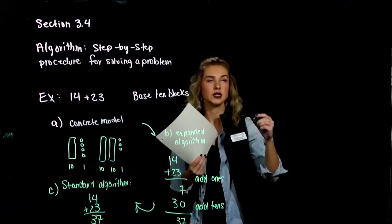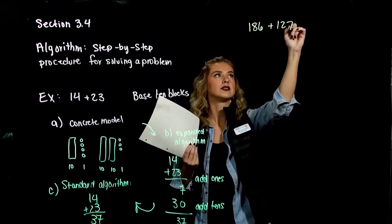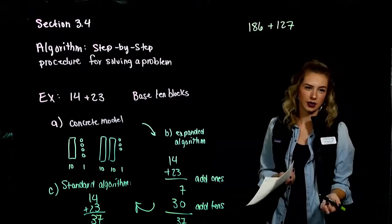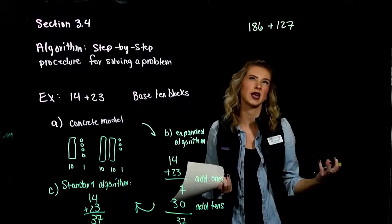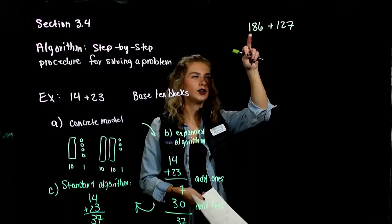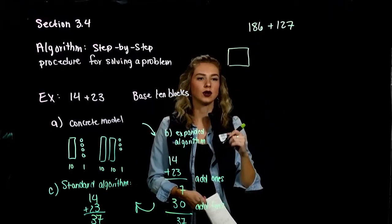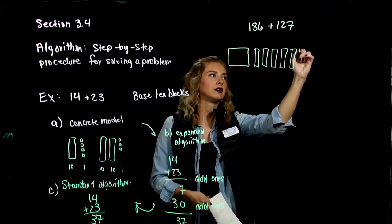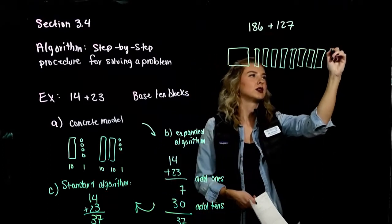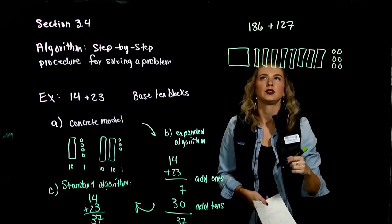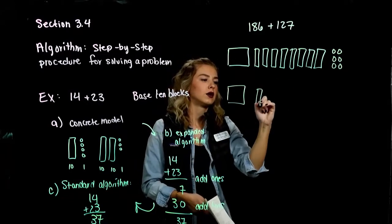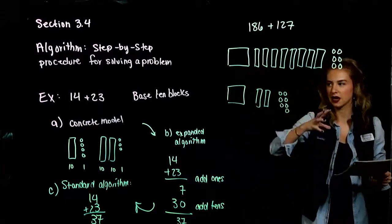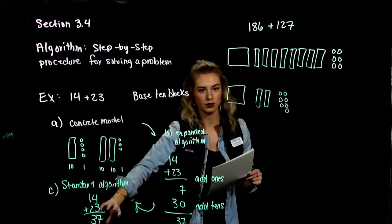Let's talk about a three-digit number. If I've got 186 and 127, we want to give them a concrete model. So 186 would be 1 flat representing 100, 8 longs, and 6 units. And 127 would be 1 flat, 2 longs, and 7 units. When we present this concrete model to students, we walk through that same process.